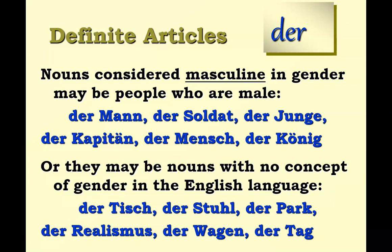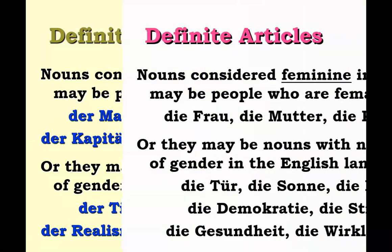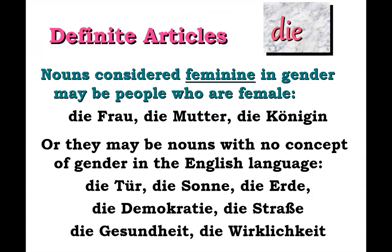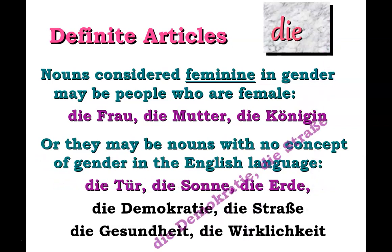The same can be said for definite articles that are feminine, or 'die.' Many of them are attributed to individuals who are female — 'die Frau' (the lady or wife), 'die Mutter' (the mother), 'die Königin' (the queen). But similar to masculine nouns, there are also nouns that take on feminine gender that have nothing to do with being female. Here are just a few examples.